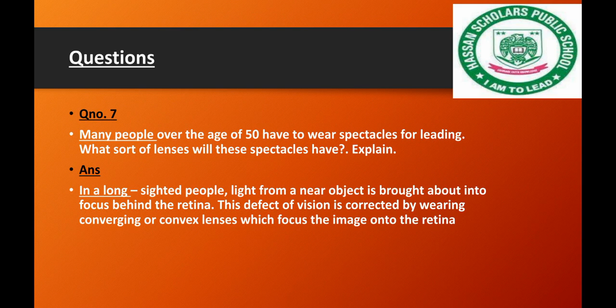The retina is the sensory area where the image is formed. Long-sightedness is corrected by using converging convex lenses, which bring the image forward onto the retina.